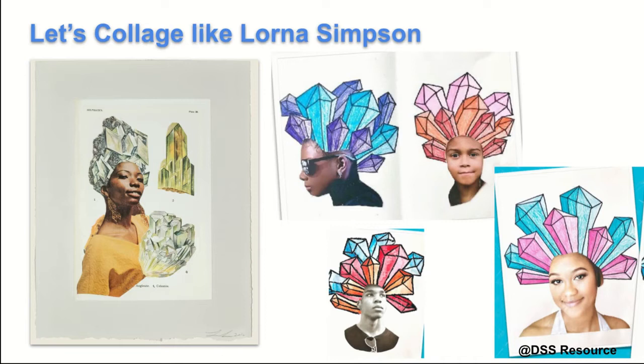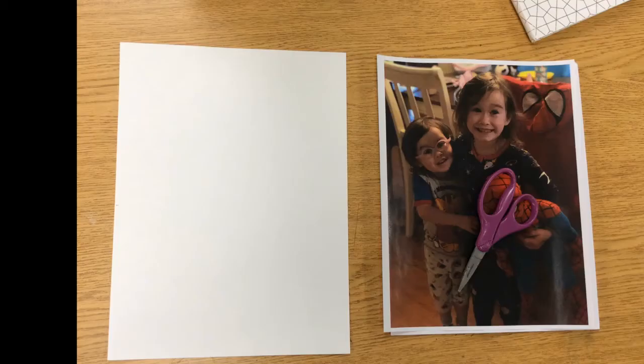So what we're going to be doing today is we are going to focus on this particular image here, which is from her Earth and Sky series. You can see with other examples here, we cut out the hair and it could be for anything. You could do this with an animal too, and then you replace it with these beautiful crystals. So we're going to be focusing on a lot of line, we're going to make a collage value, and we're also going to create the illusion of form by creating these crystals. So let's get started.